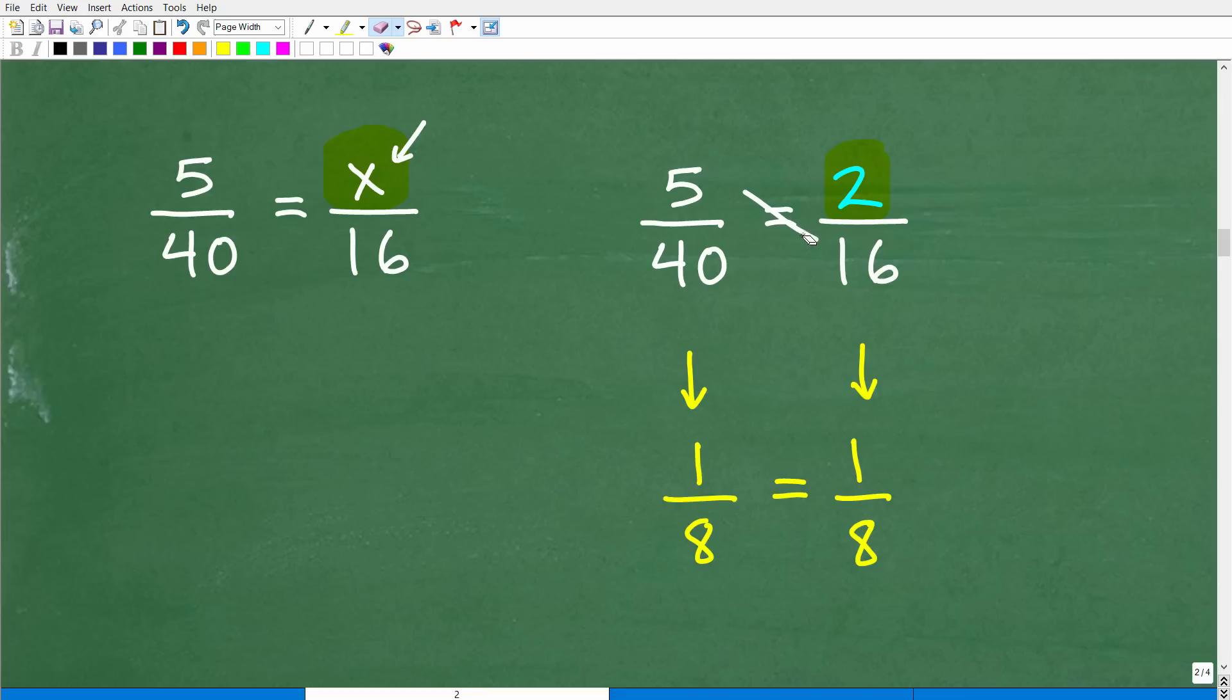But, you know, another way we can kind of look at that is we have two fractions that we can reduce down. So 2 sixteenths, I can reduce down to the fraction 1 eighth. And 5 over 40, I can also reduce down to the fraction 1 eighth, right? Because 5 goes into 40 or 8 times. So you can reduce these fractions down. You can clearly see that we are dealing with two equal fractions. So x is equal to 2 is, in fact, the correct solution to this proportion problem.